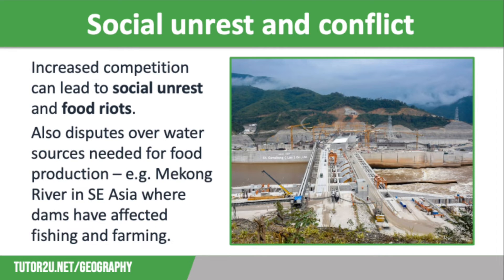Egypt, Sudan and Ethiopia all use vast amounts of water to irrigate their crops to sell both domestically and on the global market, providing much needed income for these LICs. However, Uganda wants to dam the river to generate hydroelectric power, which will help it develop economically. But at the same time, it will restrict the water flow downstream, meaning much less water for Egypt, Sudan and Ethiopia, and therefore a reduction in food production as a result.